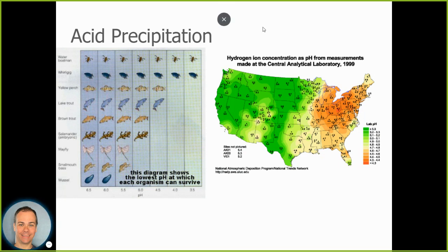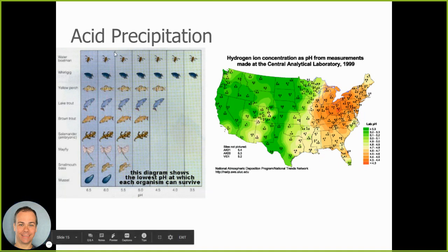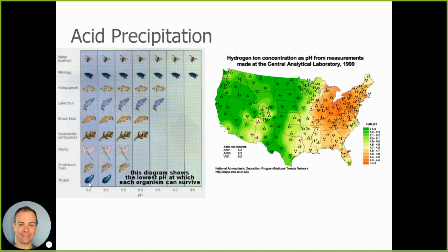A diagram shows what happens as water becomes more acidic. At a pH of 6.5, all these organisms can tolerate those conditions. But if the pH drops due to acid precipitation, at 5.5 the mussel can no longer survive. At 5.0, the mayfly and bass can't survive either. As conditions become more and more acidic, fewer and fewer organisms can tolerate them.